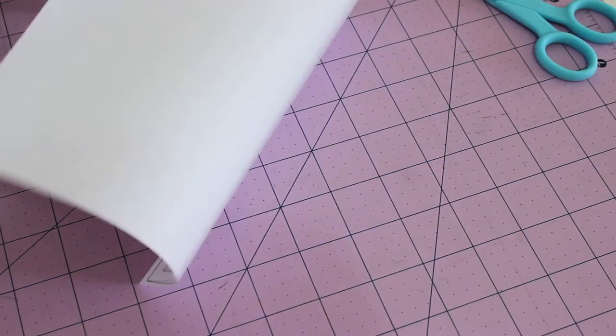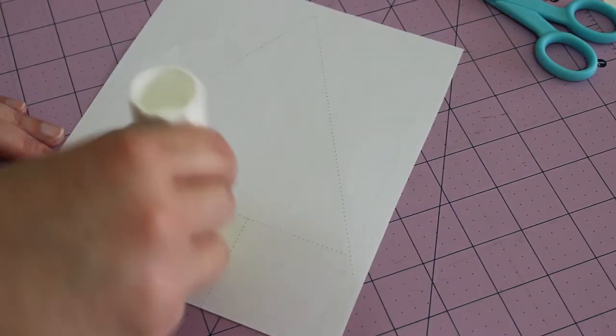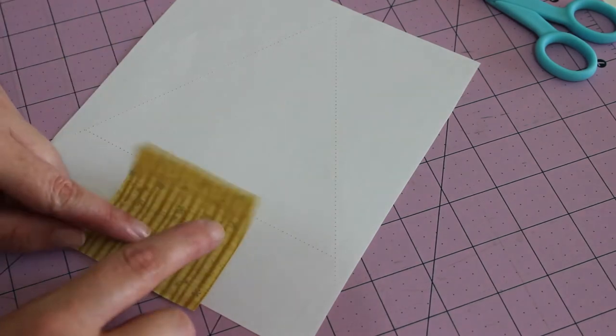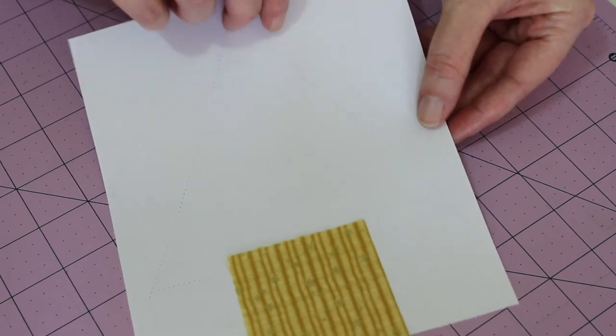On the back of the pattern, dab a small amount of glue onto the number one section and carefully center the fabric for the trunk on top with the print side facing up.